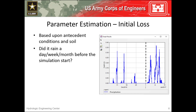Now let's talk about estimating initial parameter values. When estimating an appropriate initial loss volume, you should scrutinize the prevailing antecedent conditions prior to the start of your simulation. For instance, did it rain a week prior to the start, or has it not rained in several months? Also, how long does it typically take for infiltrated precipitation to be removed from the system through either drainage or evapotranspiration? In this image, a moderate amount of precipitation fell approximately one to two weeks prior to January 1st, which is the start of my simulation. This particular watershed takes several weeks to dry out between precipitation events, so I should start by using a small initial loss volume because I'd expect there to be a good amount of moisture still within the soil at the start of my simulation.